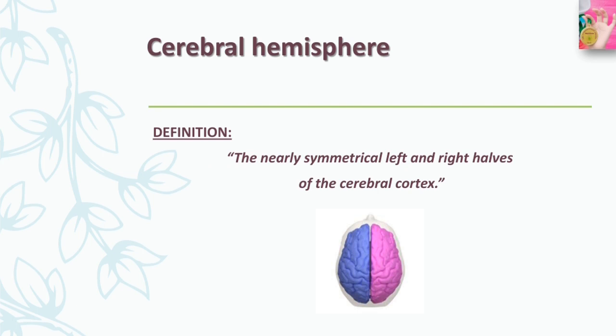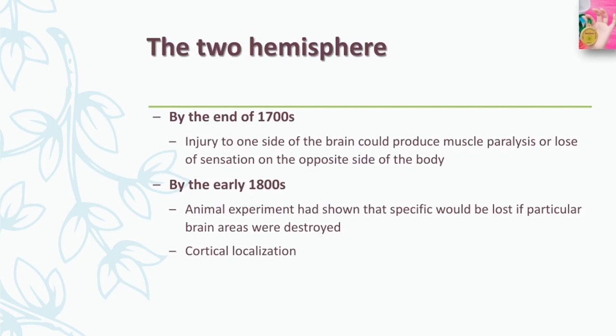What about the differences in function of the two hemispheres? In many cases the functions of the left and right hemispheres are symmetrical, meaning the same functions are located in roughly the same places on each hemisphere. Examples of such functional symmetry include the primary motor cortex and the somatosensory cortex. However, with regard to other important processes, the left and right cerebral hemispheres do differ — each hemisphere is specialized for particular abilities.